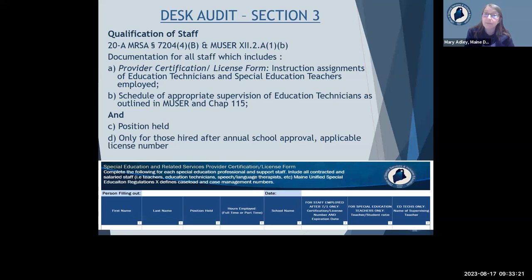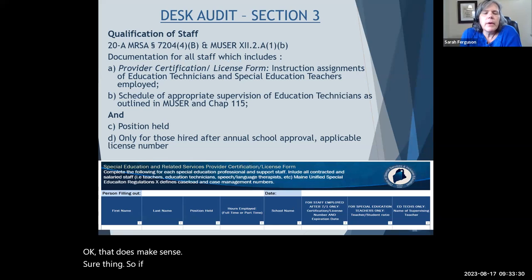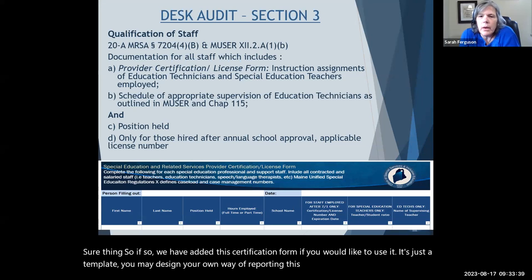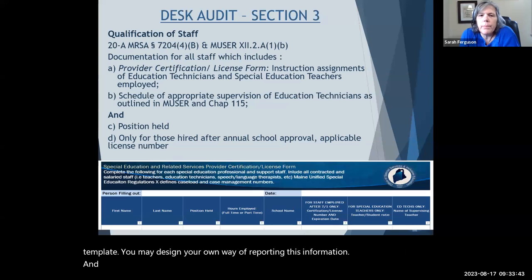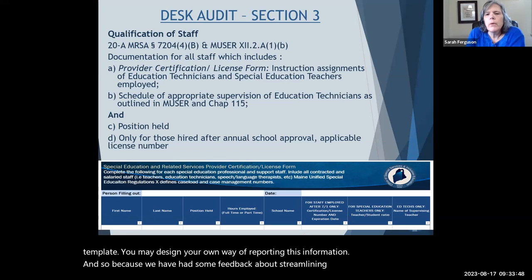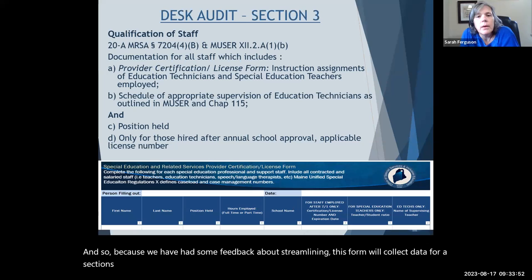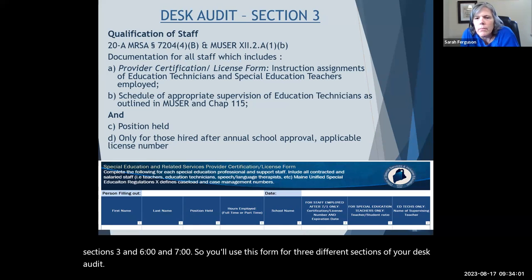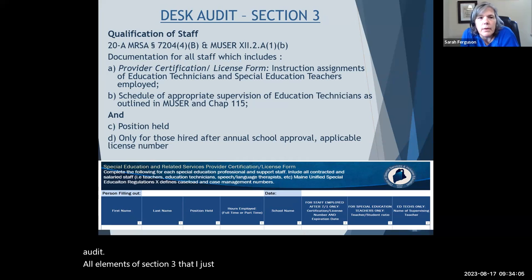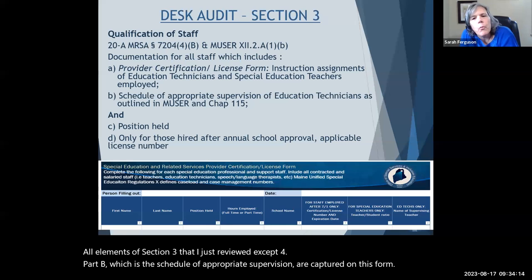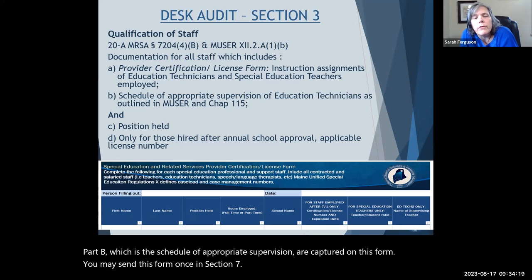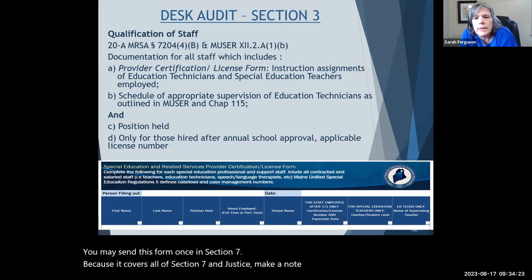We have added a certification form that you may use — it's just a template and you may design your own way of reporting this information. Because we've had feedback about streamlining this, the form will collect data for Sections 3, 6, and 7, so you'll use this form for three different sections of your desk audit. All elements of Section 3 except Part B — the schedule of appropriate supervision — are captured on this form. You may send this form once in Section 7, and just make a note in Sections 3 and 6 to see Section 7.